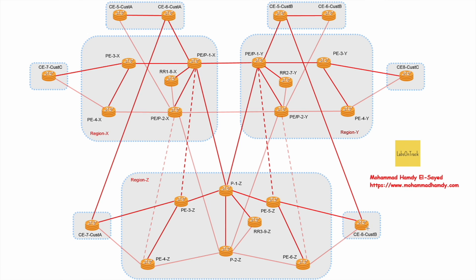Customer B's second branch is connected to Region Z, and both branches of Customer B also have direct connectivity via another service provider for additional protection. Customer C has two separate geographical sites as well, which are connected to Region X and Region Y.